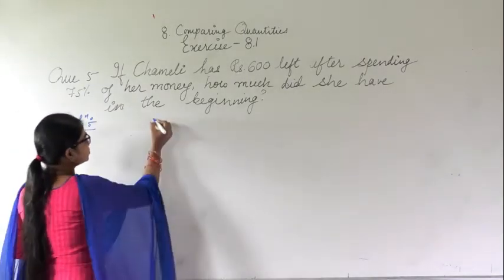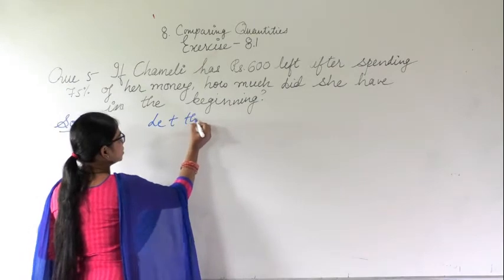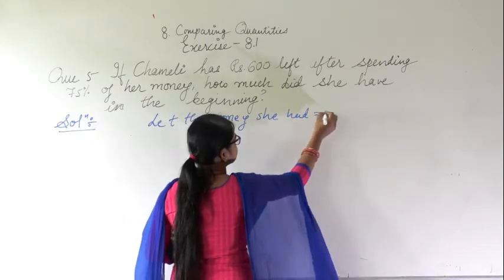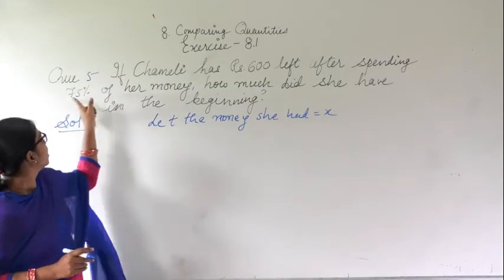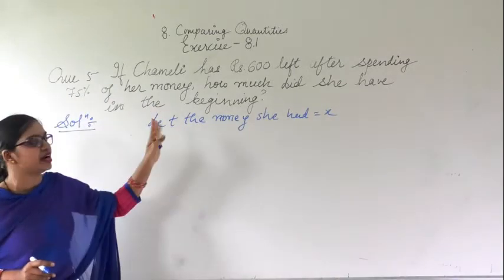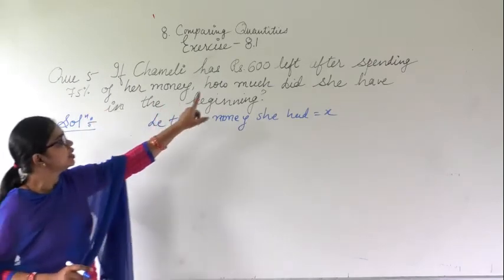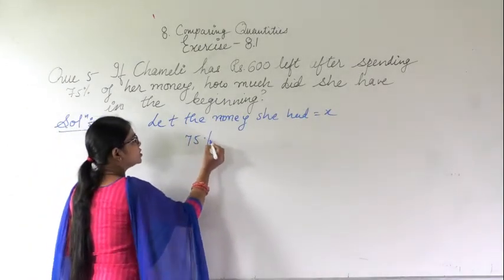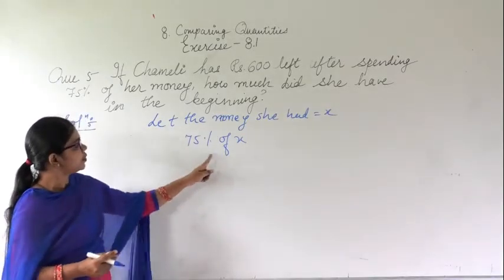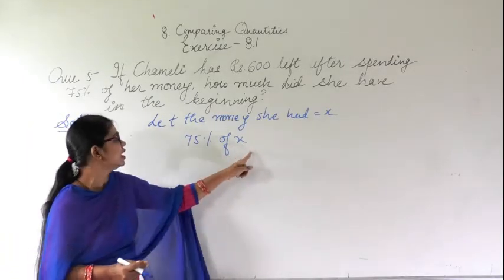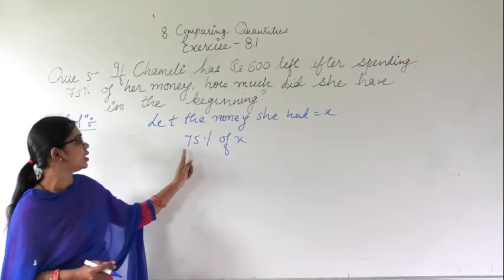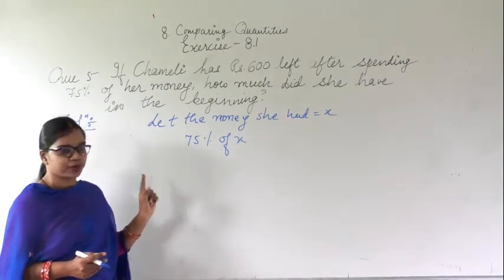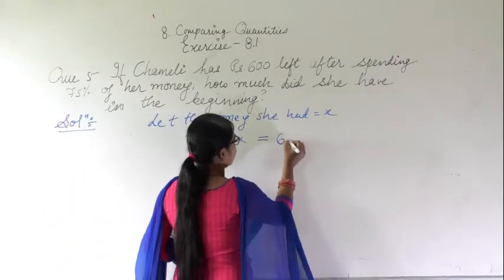So let the money she had be x. She spent 75% of her money, and after spending this 75% of the total money she is left with 600 rupees.